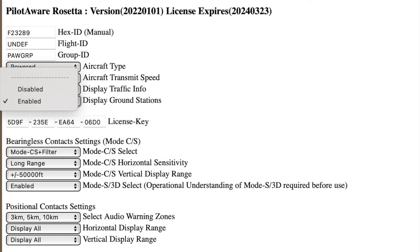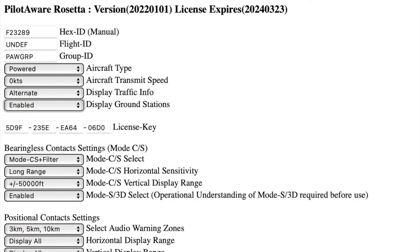The next configurable item is whether you want the ground station displayed on your electronic flight bag or radar screen. This can be enabled through the drop-down menu. Below the Display Ground Stations tab are the four boxes into which you install your license key. Please ensure you install this correctly — a common mistake is to confuse 0 with O and also confuse 8 with B, so check your license once you've put it in.